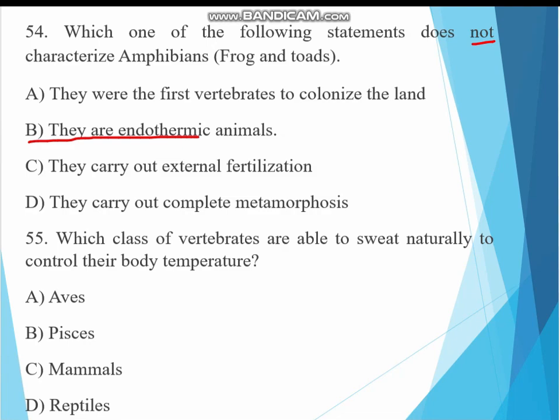Question 55. Which class of vertebrates are able to sweat naturally to control their body temperature? A. Aves, B. Mammals, C. Reptiles. The answer must be B, mammals. Only mammals naturally sweat to regulate temperatures.